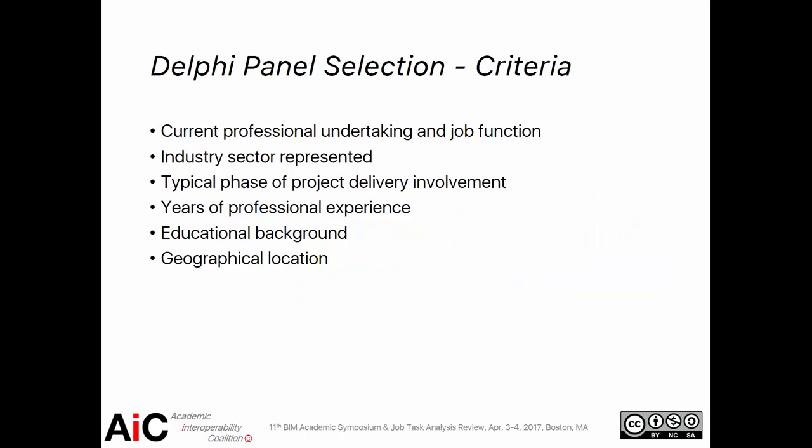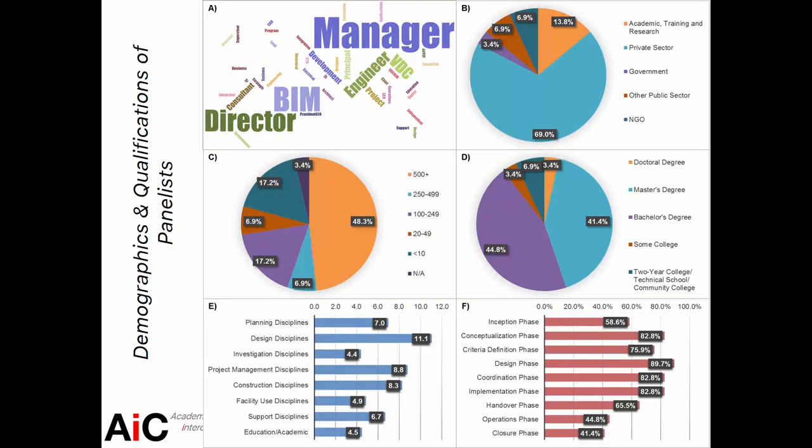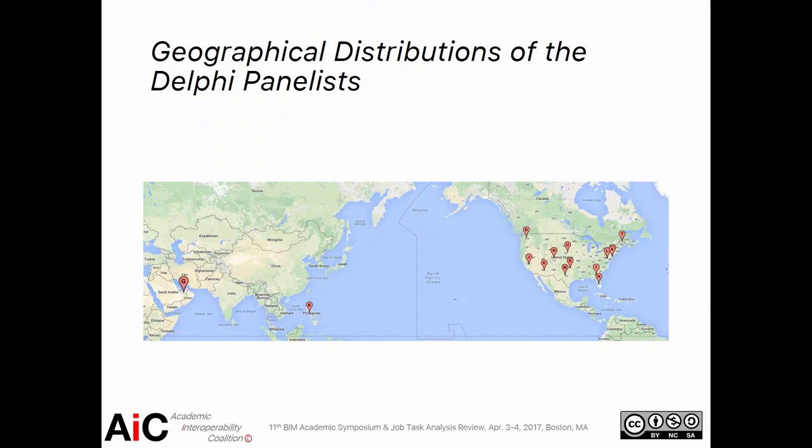For the Delphi panel selection criteria, in order to choose qualified professionals, we went through a comprehensive demographics and qualification survey. The criteria included current professional undertaking and job functions, the industry sector represented, the typical phase of project delivery involvement, years of professional experience, educational background, and geographical location. We had a lot of BIM managers and BIM directors who participated, mostly from the private sector, with good representation of different company sizes, different degree levels, different disciplines, and different phases of a project life cycle — giving us a really good diversity in our Delphi panels.